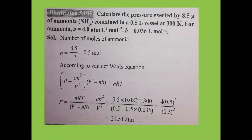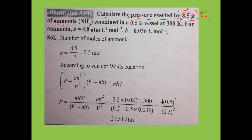Next problem: calculate the pressure exerted by 8.5 grams of ammonia. Gram molecular weight of ammonia is 17 g/mol. Number of moles N = given weight / gram molecular weight = 8.5 / 17. The ammonia is contained in a 0.5 liter vessel at 300 K.